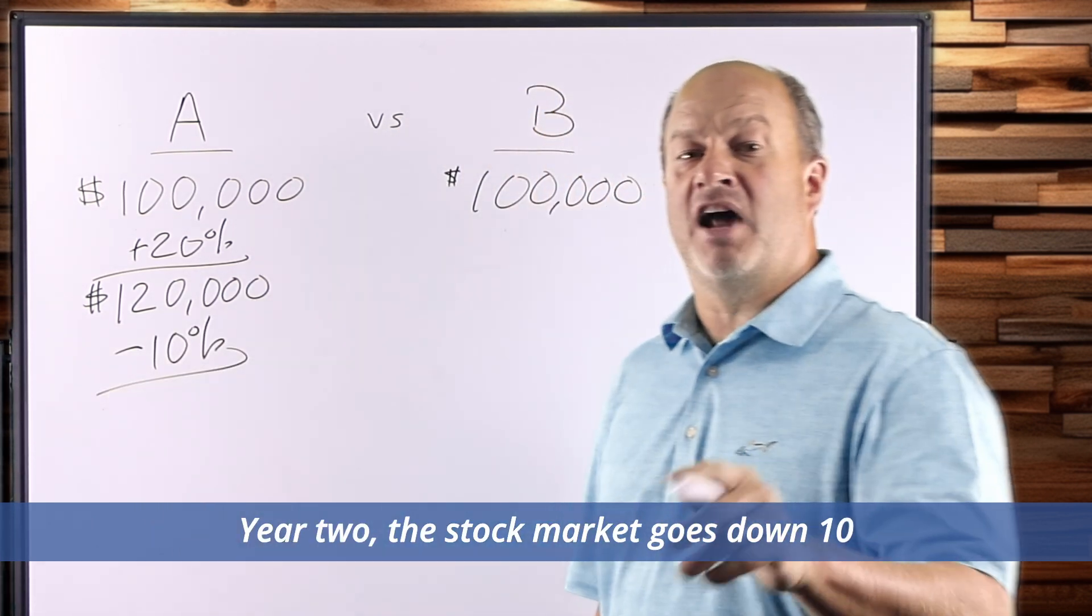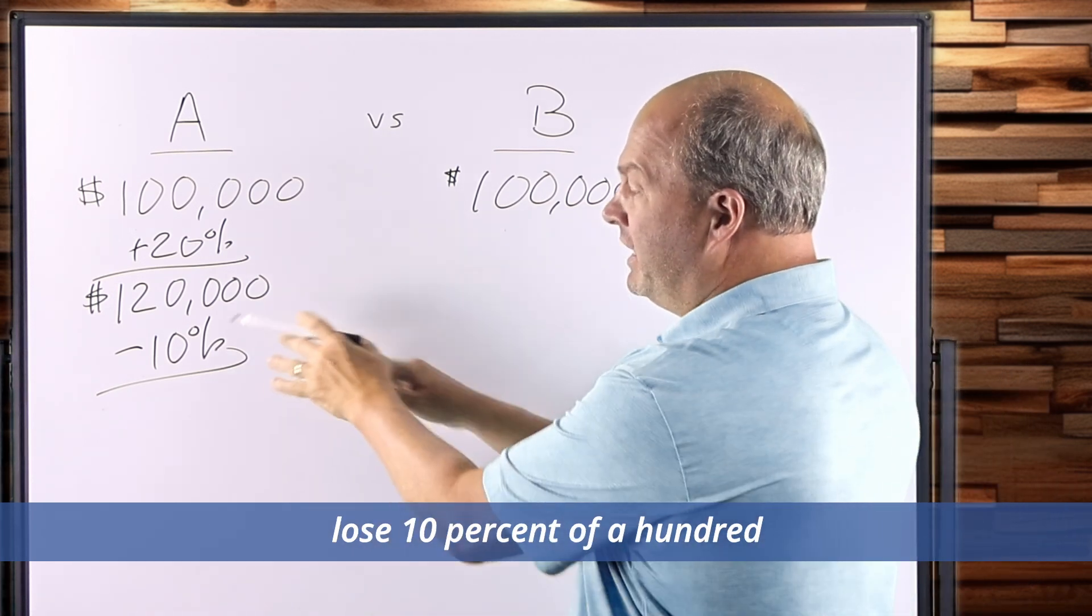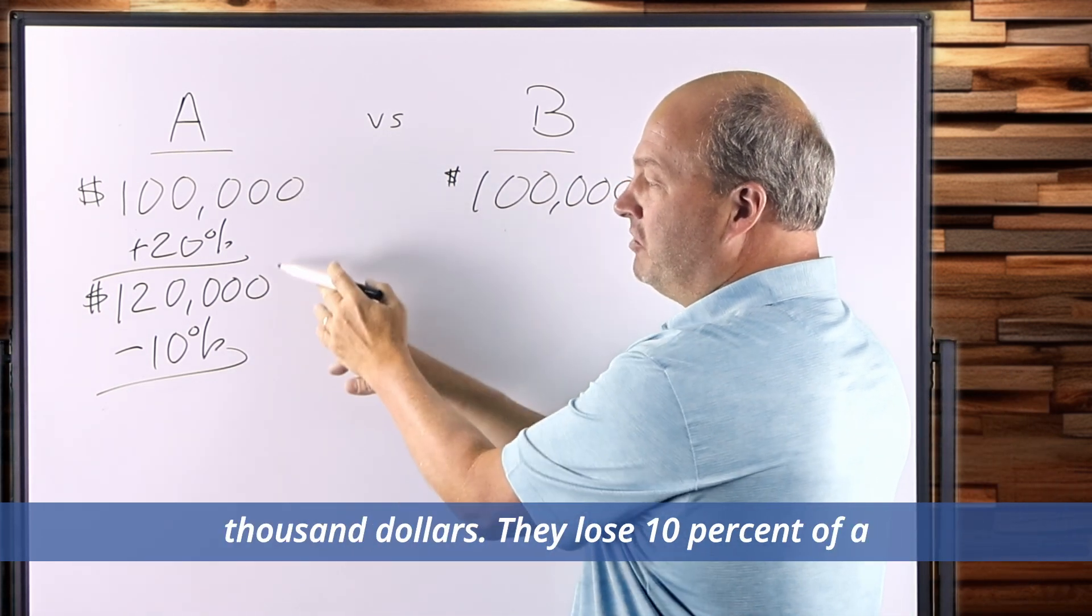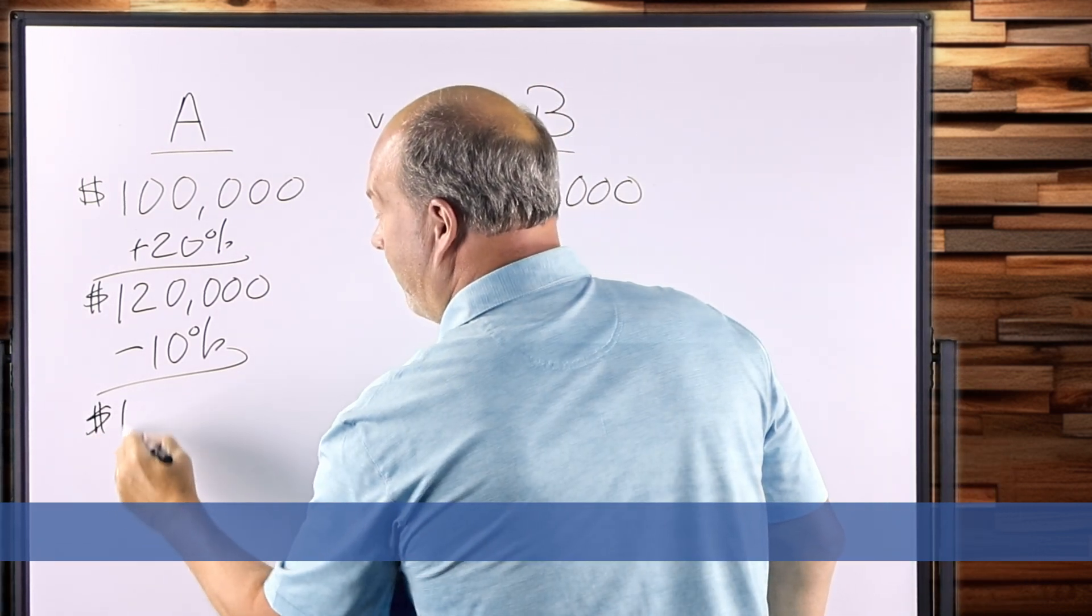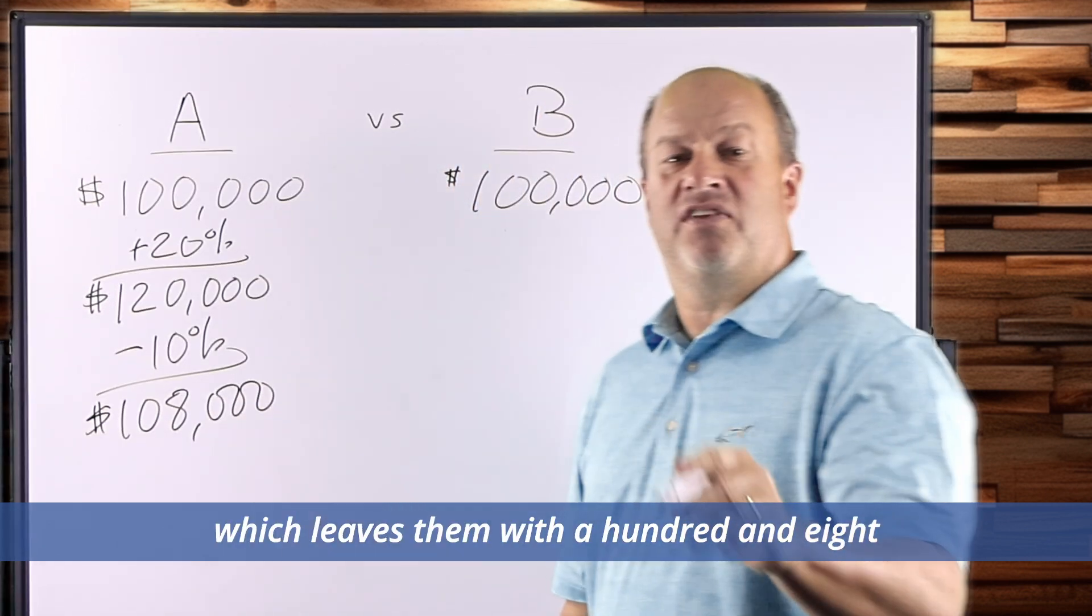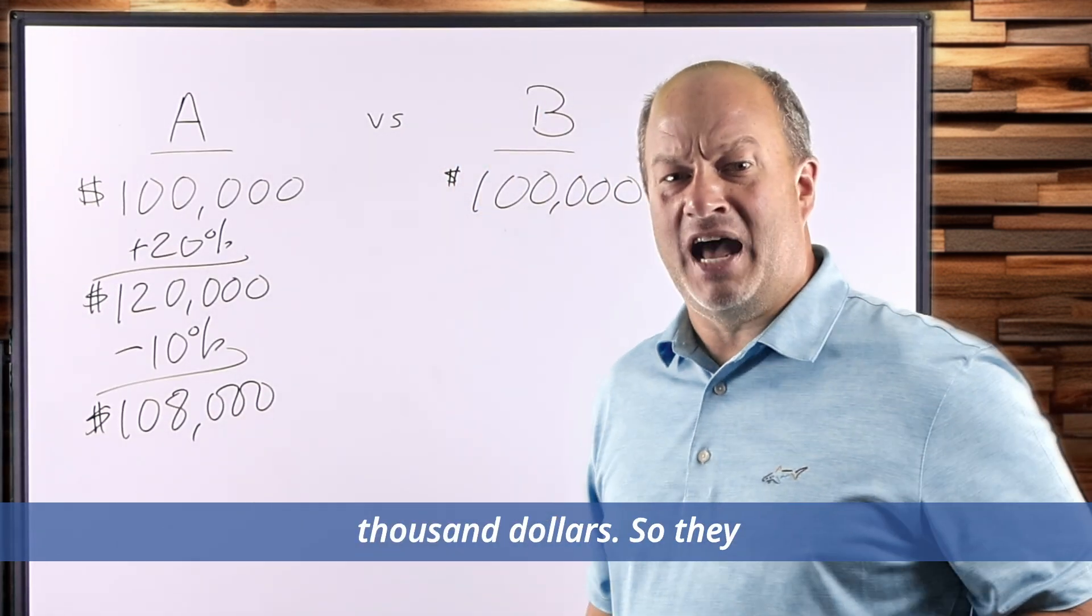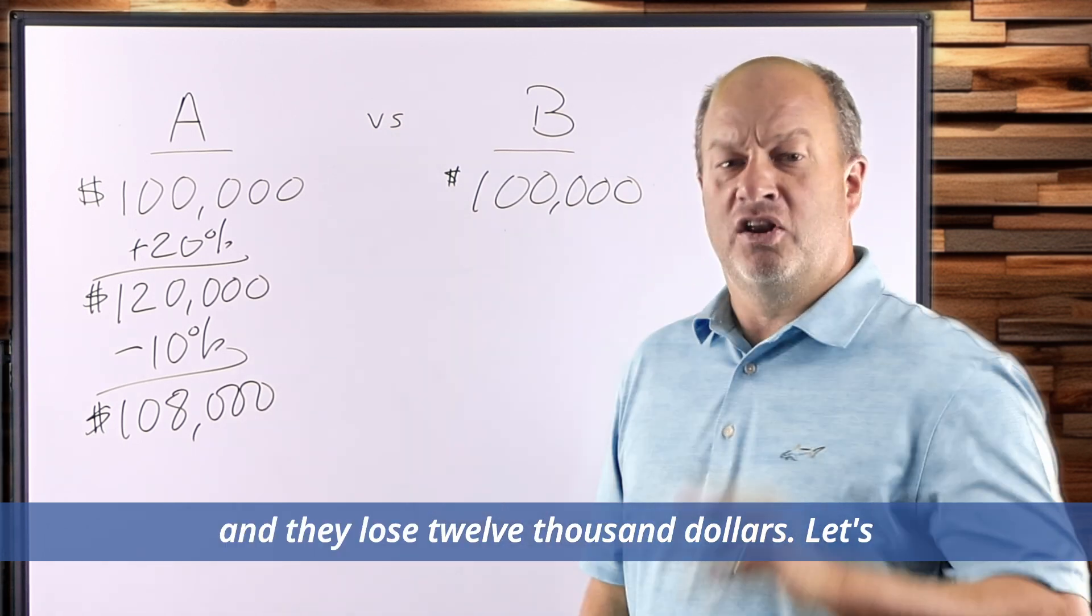In year two, the stock market goes down 10%. But they don't lose 10% of $100,000. They lose 10% of $120,000, which leaves them with $108,000. So they gain $20,000 and they lose $12,000.